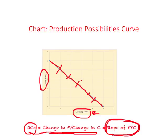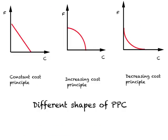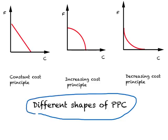What does a straight-line PPC mean? It represents what we call Constant Opportunity Cost, or the Constant Cost Principle. When you see a straight-line PPC, this is what it represents. Now let us consider different shapes of PPC, because these different shapes have been used to explain international trade theories. The first one — Constant Cost Principle — has a straight-line PPC representing a constant slope or constant Opportunity Cost of Clothing.